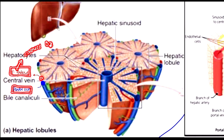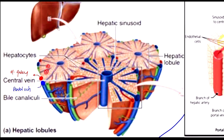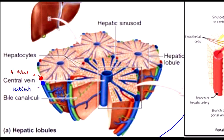The hepatic artery carries oxygen and is the main medium through which liver cells are oxygenized. The portal vein carries nutrition — whatever food material we ingest goes into the hepatocytes via the portal vein. This is why we say the liver has dual blood supply: hepatic artery and portal vein.